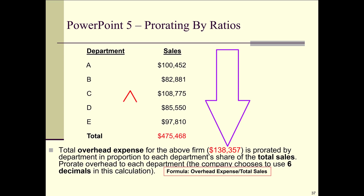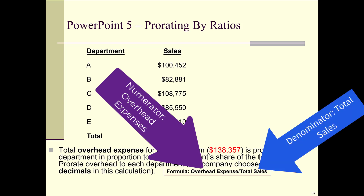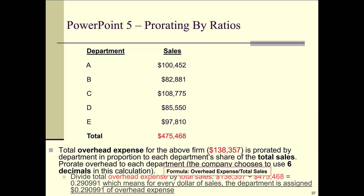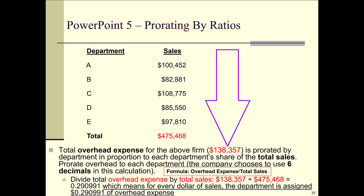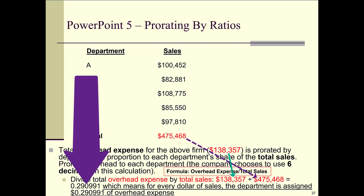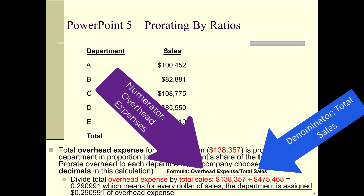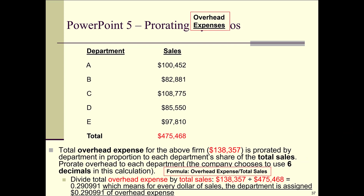Here's the formula: we take overhead expenses and divide by total sales — overhead expenses on top, total sales on the bottom. So $138,357 divided by $475,468 gives you 0.290991. This means for every dollar of sales, each department is going to get approximately 29 cents of overhead expense.